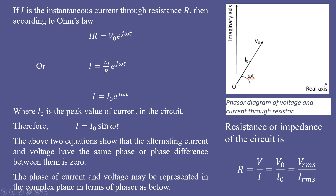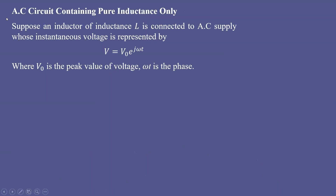The effective resistance of the circuit — also called the impedance — is given by R = v/i, or equivalently v₀/i₀, or v_rms/i_rms. All these expressions give the impedance of the circuit. When a resistor is connected to AC, current and voltage are in phase and the effective resistance is simply v₀/i₀. Next, we take an AC circuit containing pure inductance only.